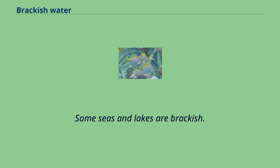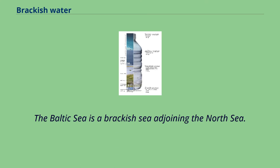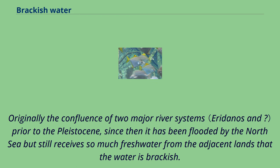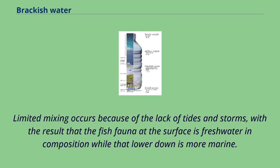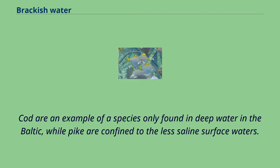Some seas and lakes are brackish. The Baltic Sea is a brackish sea adjoining the North Sea. Originally the confluence of two major river systems prior to the Pleistocene, since then it has been flooded by the North Sea but still receives so much freshwater from the adjacent lands that the water is brackish. Because the saltwater coming in from the sea is denser than freshwater, the water in the Baltic is stratified, with saltwater at the bottom and freshwater at the top. Limited mixing occurs because of the lack of tides and storms, with the result that the fish fauna at the surface is freshwater in composition while that lower down is more marine. Cod are found only in deep water in the Baltic, while pike are confined to the less saline surface waters.